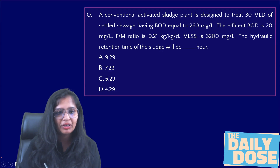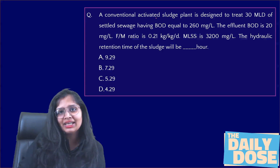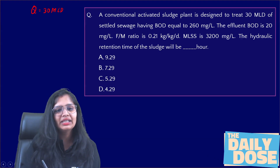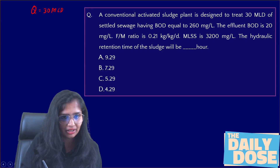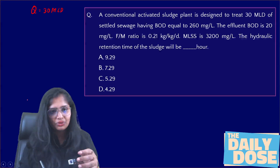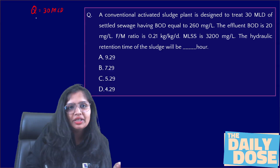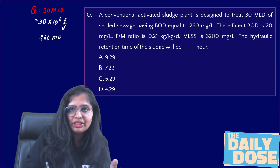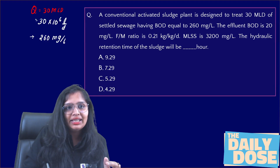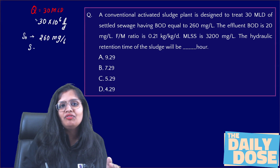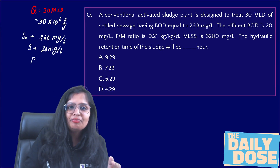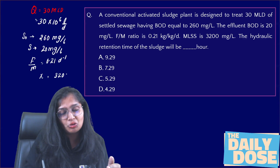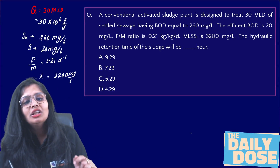First, read the question before I solve it. In this question, a conventional activated sludge plant is designed for 30 MLD water — that is 30 × 10⁶ litres per day. The BOD coming in is 260 mg/L, and the BOD coming out is 20 mg/L. The F/M ratio is 0.21 per day inverse, and the MLSS concentration — which we call X, the microorganisms — is 3200 mg/L. What is asked is the hydraulic retention time.